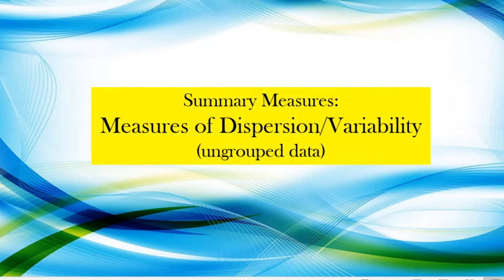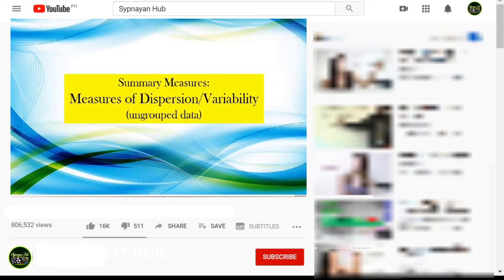Welcome to the continuation of our presentation on the different summary measures. In the last video we talked about the different measures of central tendency, and in this video we will be talking about the second summary measure called the measures of dispersion or variability.